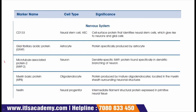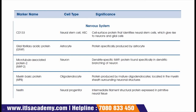The next marker is MAP2, or microtubule associated protein 2. This marker is present in neurons. The significance of this marker is that it is a dendrite specific MAP protein found specifically in the dendritic branching of neurons. The next marker is MBP, or myelin basic protein. MBP is present in oligodendrocytes, and its significance is that it is a protein produced by mature oligodendrocytes.